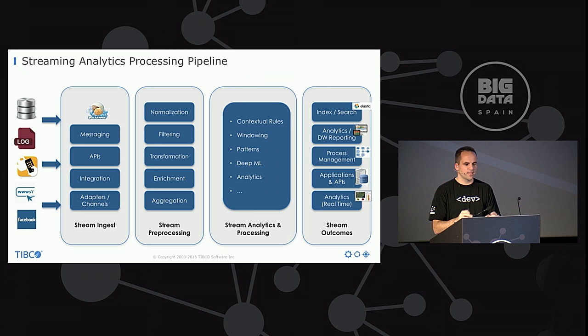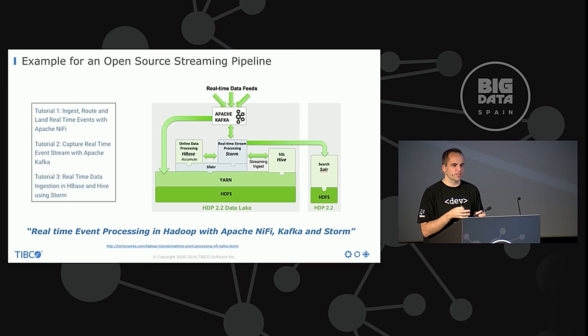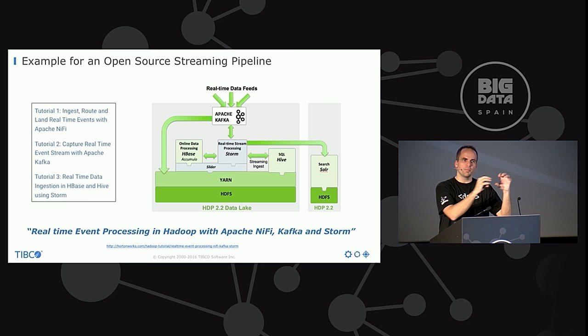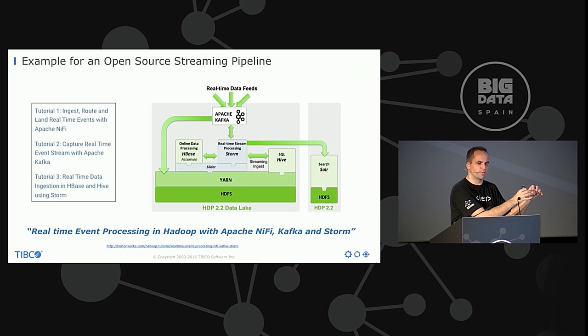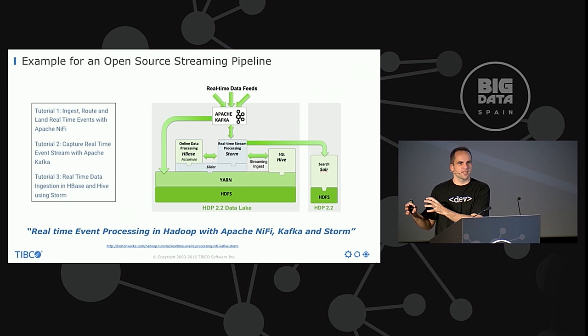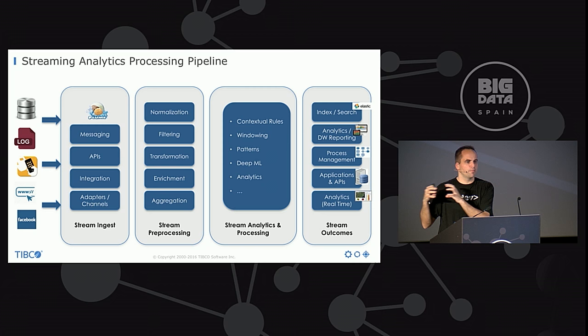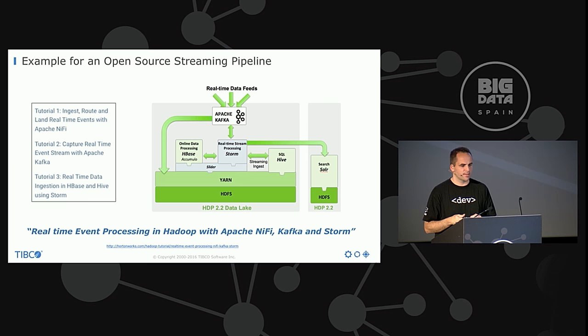Going back to the stream processing pipeline — ingestion, pre-processing, streaming analytics — here's one example of how they're combined, taken from the Hortonworks website. They combine Apache NiFi for ingestion, getting data from many different sources — often from the edge for IoT, where MiNiFi, a small lightweight version of NiFi, can be deployed on edge devices. Then Apache Kafka as the messaging layer, and finally Apache Storm for the streaming analytics part. So you have three different frameworks for the three parts of the puzzle. That separation of concerns is a trade-off — it can be good, but it also means different frameworks to maintain and keep in production.